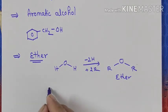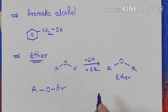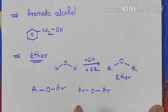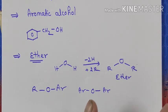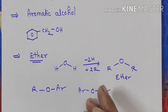Ether can also be represented as R-O-Ar, where one group can be aromatic and one aliphatic, or both groups can be aromatic. This is all called ether. So I hope you understood what is alcohol, what is phenol, and what is ether. One more thing — we are studying ether in alcohol because ether is a derivative of alcohol.